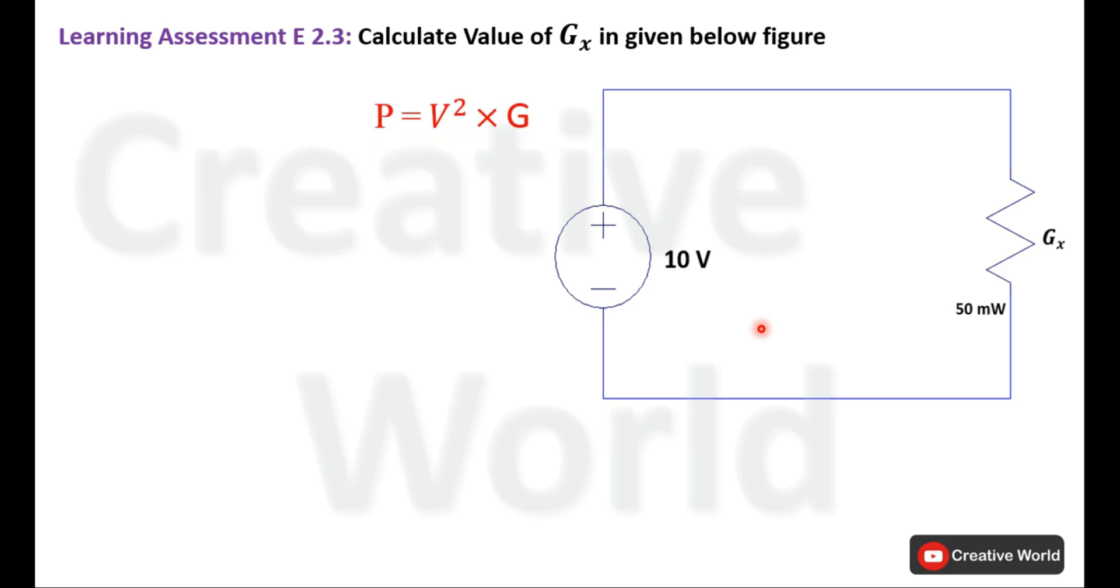Using the power formula that includes G instead of resistance R. In this formula voltage is known and power is known. We can calculate the value of G. Value of GX will be P divided by V square.